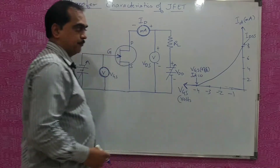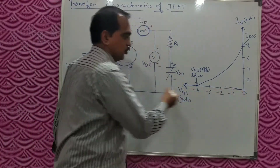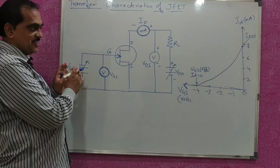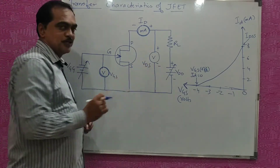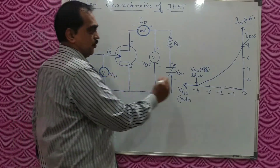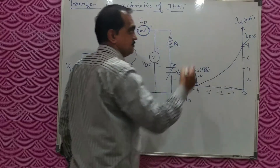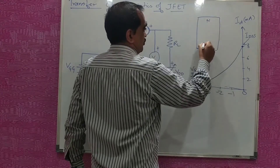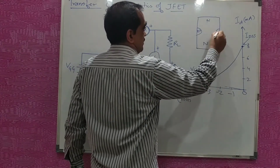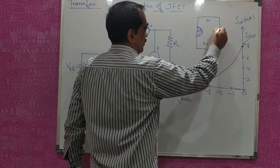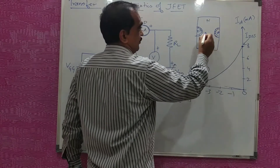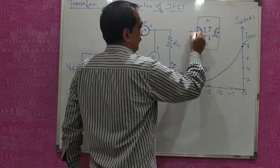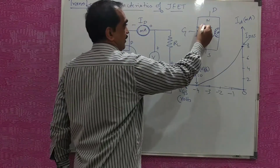The VGS values go from minus 1, minus 2, minus 3, minus 4, shown on the negative x-axis, with output current on the y-axis. Initially when VGS is 0 and output voltage is kept at some constant value, the current flowing is maximum. In the JFET diagram, with N-channel between two P regions, when VGS equals 0 the depletion layer is normal, channel width is more, and many electrons flow from source to drain.